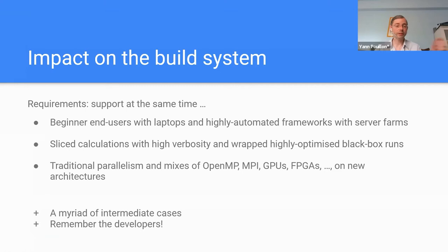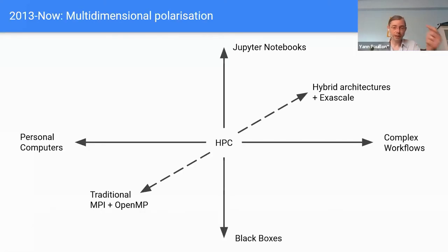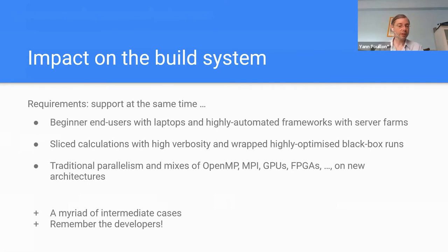When we had one dimension, it was just tuning things for users. But now each of us is a set of points in a complex space, because at different moments in time we use different configurations. We also have to remember the developers and the test farm — it's important that when the build system evolves, it does not break the test farm.